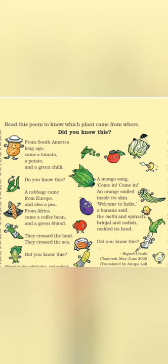बच्चों, कुछ ऐसी भी vegetables हैं जो हमेशा से हमारे देश में नहीं उगा करती थीं - कुछ vegetables हमारे देश में बाहर की country से आई हैं। Let's read the poem: From South America long ago, came a tomato, a potato and a green chilli. Do you know this? A cabbage came from Europe and also a pea. From Africa came a coffee bean and a green bhindi. They crossed the land, they crossed the sea. Did you know this? A mango sang come in come in, an orange smiled inside its skin. Welcome to India, a banana said, the methi and spinach, brinjal and radish nodded its head. Did you know this?